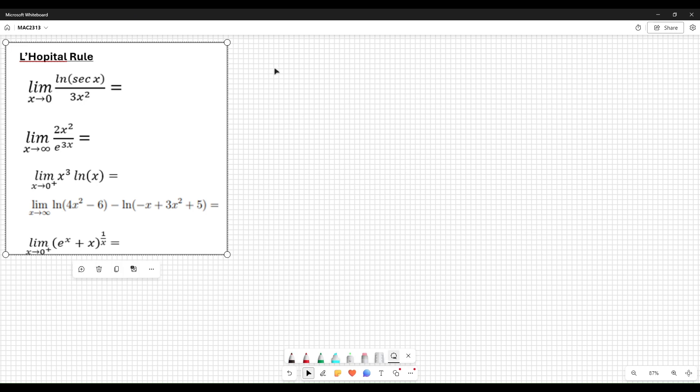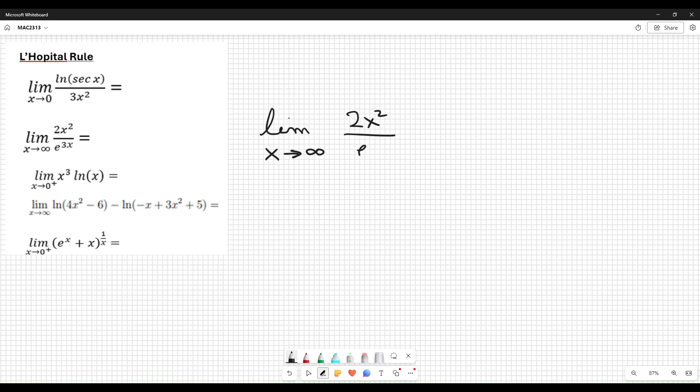Next. This is a limit when x approaches infinity. 4x over e to the 3x. You plug it in. It is infinity over infinity. Now, L'Hôpital.